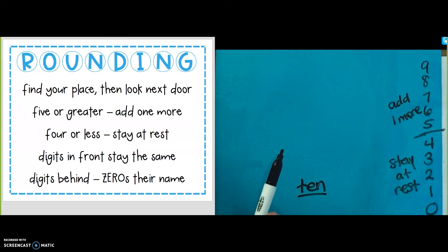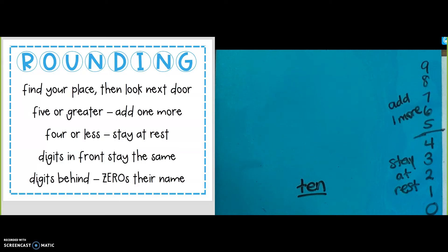Find your place, then look next door. Five or greater, add one more. Four or less, stay at rest. Digits in front stay the same. Digits behind, zero is their name. I know that's a lot to look at. We're just going to look at the first three lines to start out with.